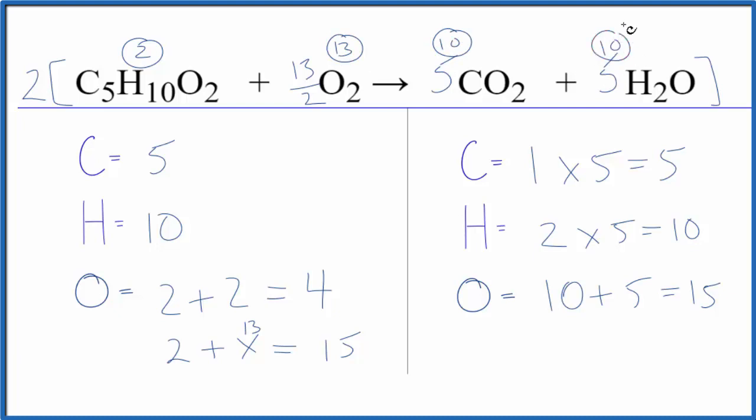So if you need whole number coefficients, they end up being two, thirteen, ten, and ten. So that's also a correct ratio for this equation. So the key here, leave the oxygen till last and then